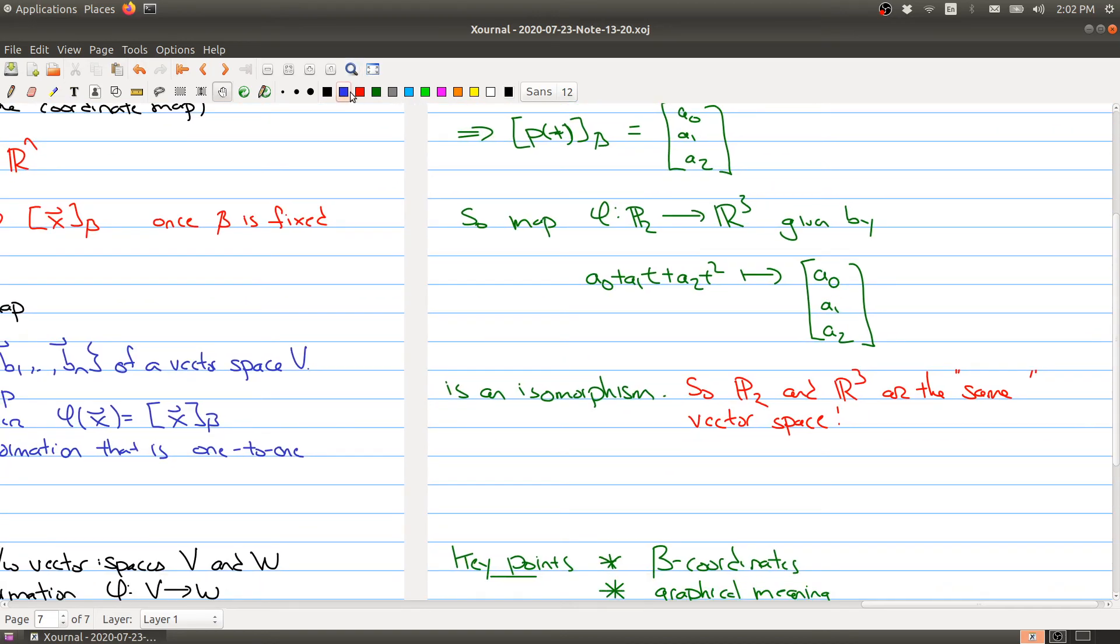So you could actually push this further. In fact, Pn and R^(n+1) are isomorphic. So I haven't really said what isomorphic is, but it just means that there's an isomorphism between Pn and R^(n+1). So these vector spaces are really the same thing.